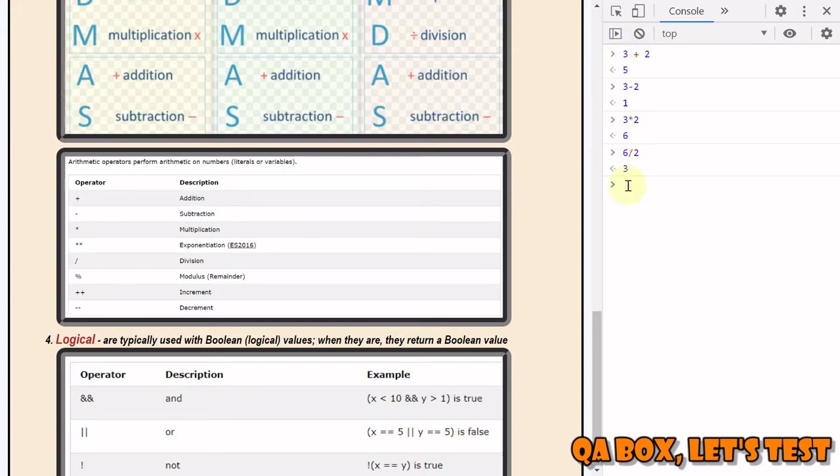There is one more which is called modulus, which gives you the remainder. This is a good way of identifying whether a number is odd or even. If a number is even and you divide it by two using the modulus symbol, which is percentile, you get zero, meaning it's an even number. If you use an odd number and find the modulus of it, you will get one. These are five different arithmetic operators.